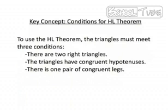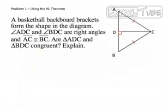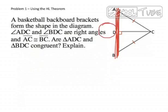So let's work the first problem. We're going to use the Hypotenuse-Leg Theorem. This is another instance where my artistic ability is lacking, so I just took this diagram from the book. It's supposed to resemble a basketball backboard and hoop. Right here you'd have the basketball backboard, and then you'd have the hoop right here with the net.